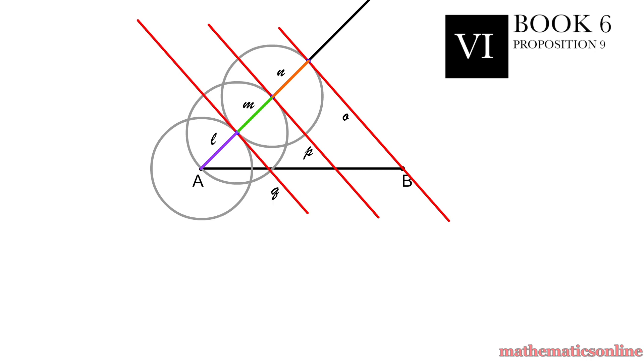So according to Proposition 9 Book 6, L plus M is double of N, so therefore AC is double of CB.